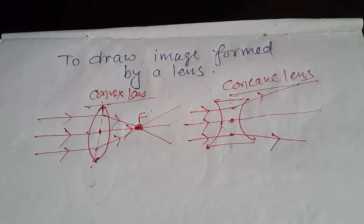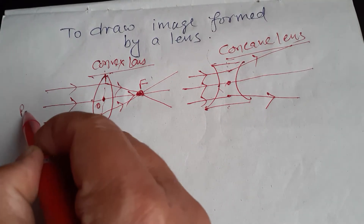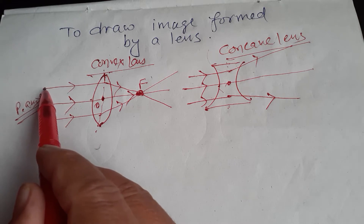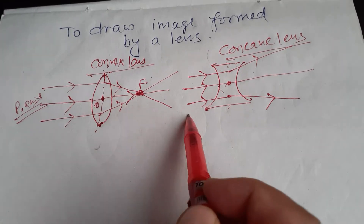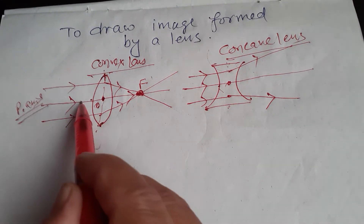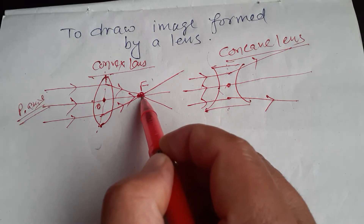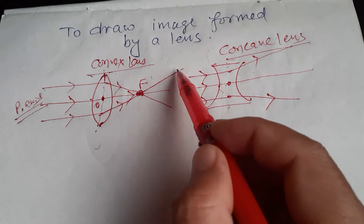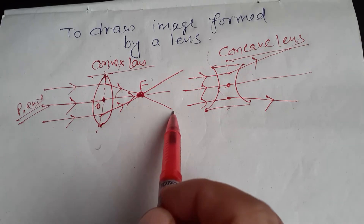Now we discuss the laws of refraction through the lens. This is the optical center, and this is the principal axis. The light rays coming from the object parallel to the principal axis always pass through the principal focus F. So to draw the ray diagram, we have to refract the light rays — rays parallel to the principal axis always pass through F after refraction.